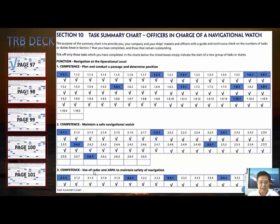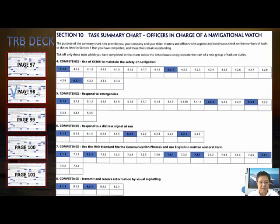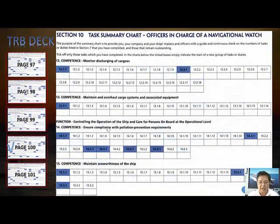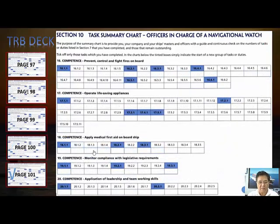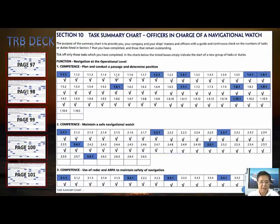You have already completed three competencies — write those down. Check other pages: page 98, 99, 100, 101 — none yet done. Only page 97 has been completed. The three completed competencies are: plan and conduct a passage, maintain safe navigational watch, and use of radar and ARPA to maintain safe navigation.